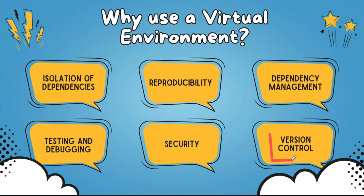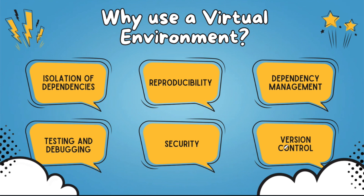And finally, version control. Creating files like requirements.txt is a way of version control — a file which has all the dependencies that you're using in your projects. This ensures that the development environment is consistent across different machines and makes collaboration so much easier. Those are the six reasons why.